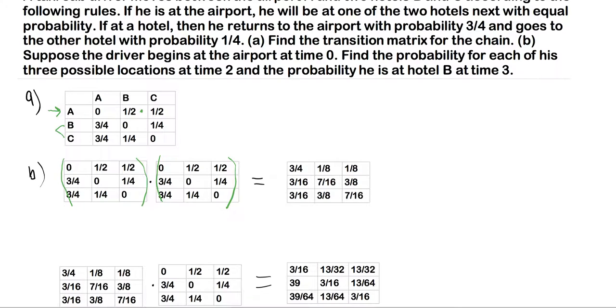if we start at A, now remember, this is our A for the airport. If we start at the airport at time zero, what's the probability of each of his possible three locations at time two? Well, all we have to do is go right across this row and then note that these are the three possible locations.